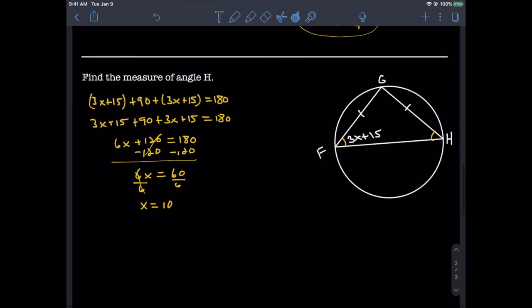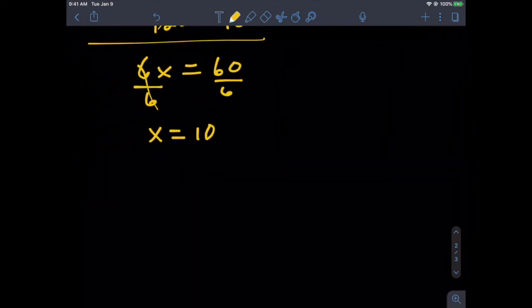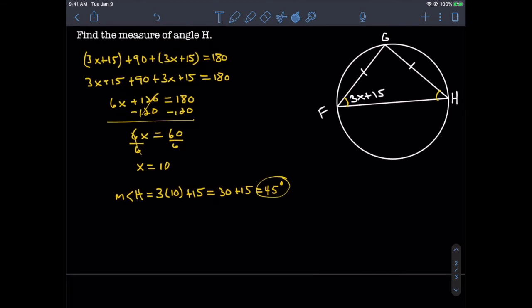Of course, we didn't just want x—we wanted to find the measure of angle H. H is the same as 3x + 15, and we have a value for x, so let's plug it in. The measure of angle H equals 3(10) + 15 = 30 + 15 = 45 degrees.